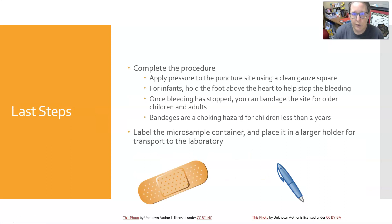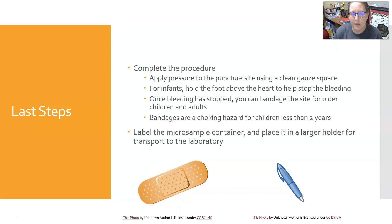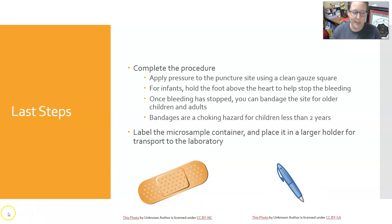To complete the procedure, apply pressure to the puncture site with a clean gauze square until bleeding stops. For infants, hold the foot above the heart to help stop bleeding. Once bleeding has stopped, bandage the site for older children and adults — but bandages are a choking hazard for children under two years. Finally, label the micro sample container and place it in a larger holder for transport to the laboratory.